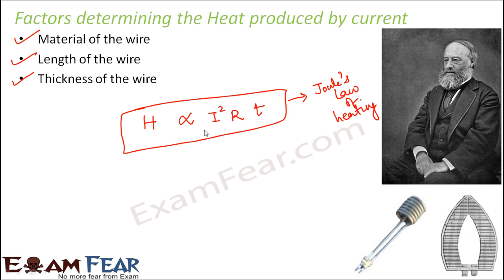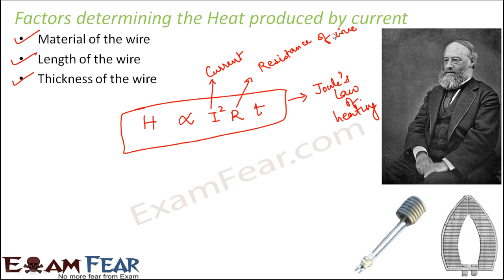Let us understand this relation in more detail. What is I? I is the current flowing through the wire — so if more current is flowing, more heat will be produced. What is R? R is the resistance of the conductor through which current is flowing. And what is T? It is the time for which current flows through the wire — the time of current flow.